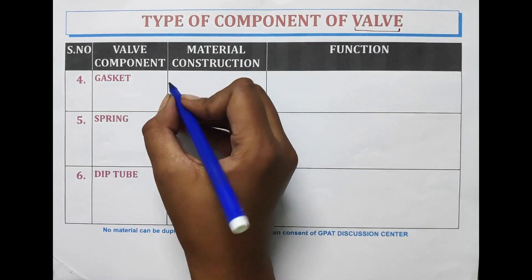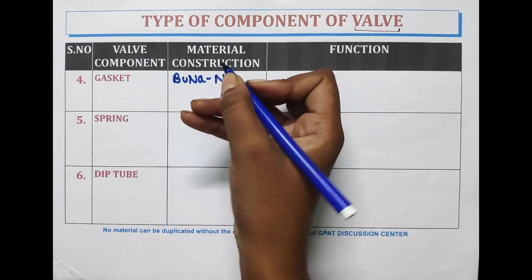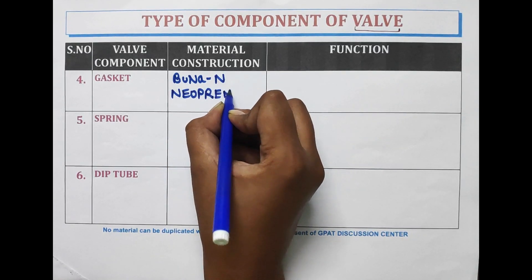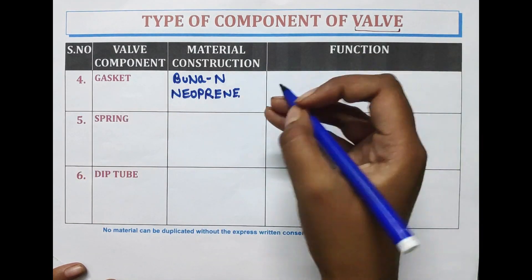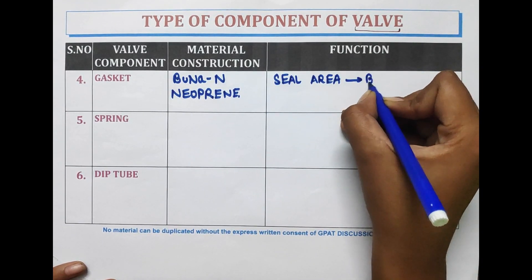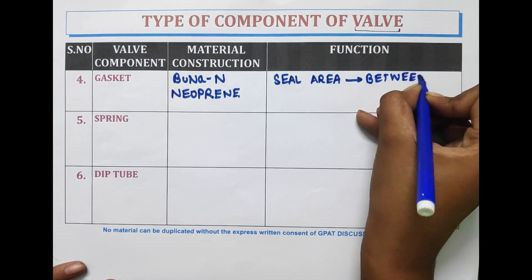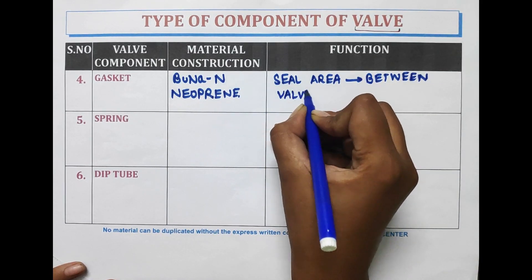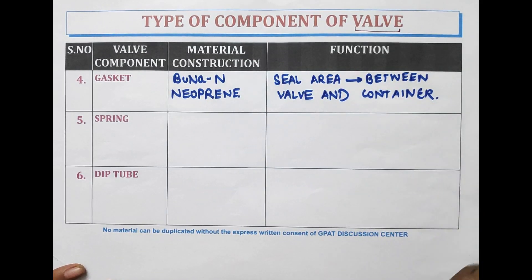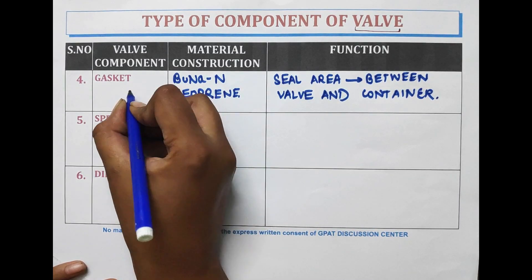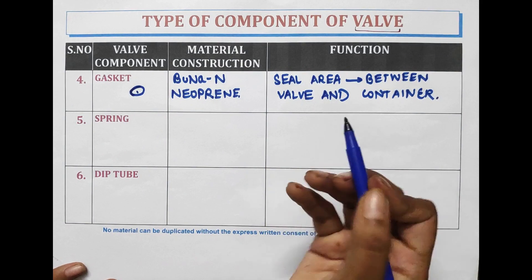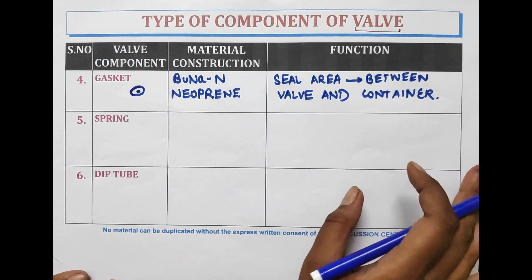Another part is the gasket. It is made up of Buna-N or neoprene. It is used to seal the area between the valve and the container. It is a small structure made up of Buna-N or neoprene that seals the area between the valve and the container.